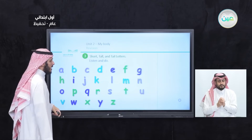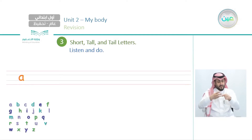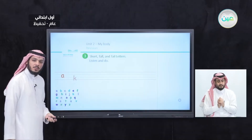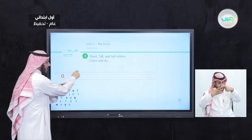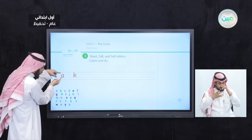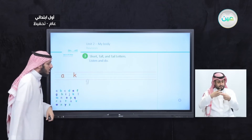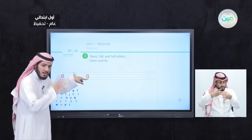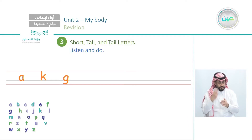Now let's see them in the lines. We have A between the two gray lines — this is a short letter. What about B? We have this letter as tall because it starts from line number one up to line number three. So if it's short, it starts from two to three. If it's tall, it starts from number one, the red one, up to number three. What about G? It starts from number two up to number four — this is called tail. So we have short, tall, tail.